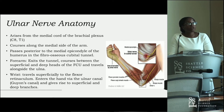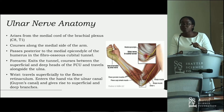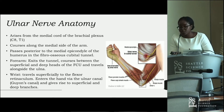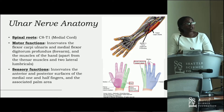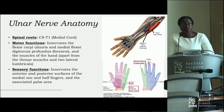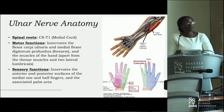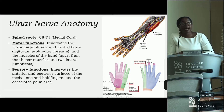At the wrist, it travels superficially to the flexor retinaculum, then traverses Guyon's Canal and gives rise to superficial and deep branches. The spinal roots are C8 to T1, arising from the medial cord. In the forearm, it innervates the flexor carpi ulnaris and the medial one-half of the flexor digitorum profundus, and provides sensory innervation to the medial one-and-a-half digits of the hand and the associated palmar surface.